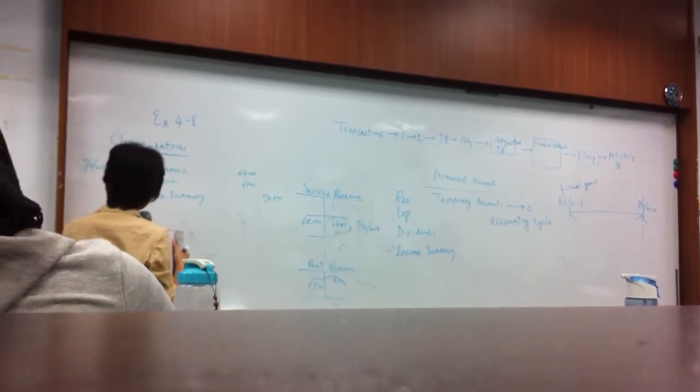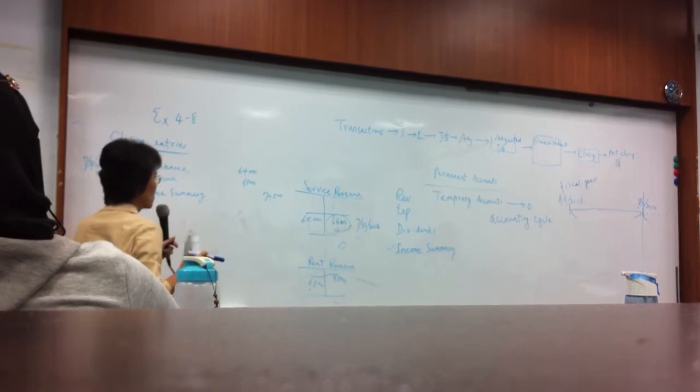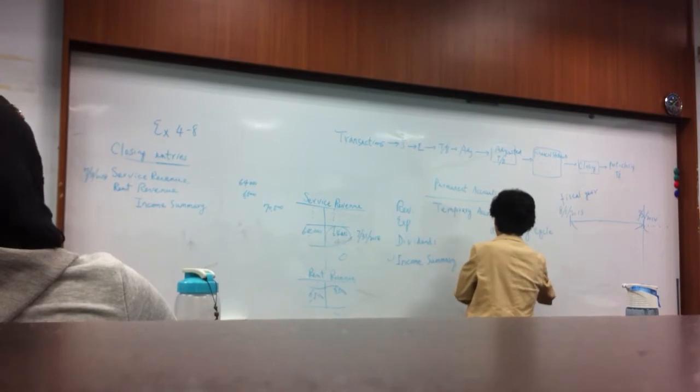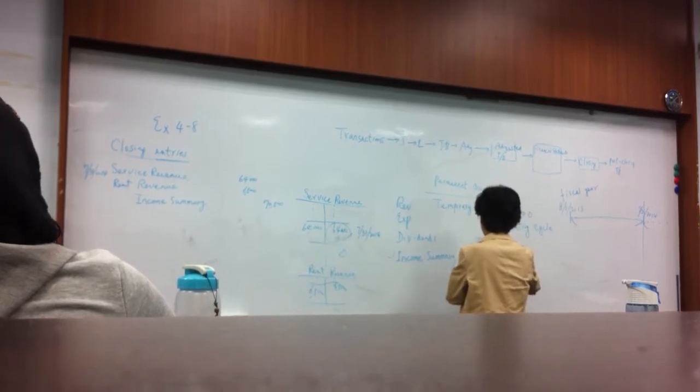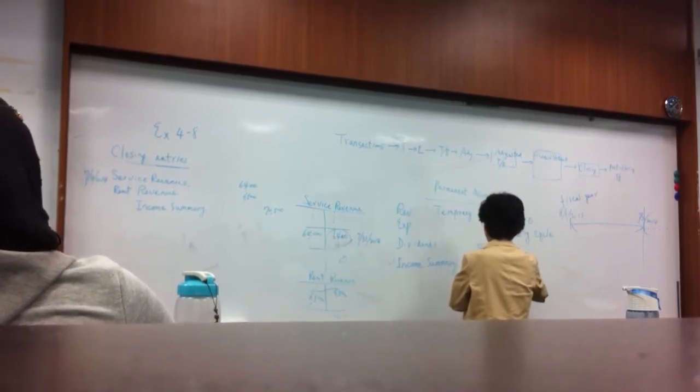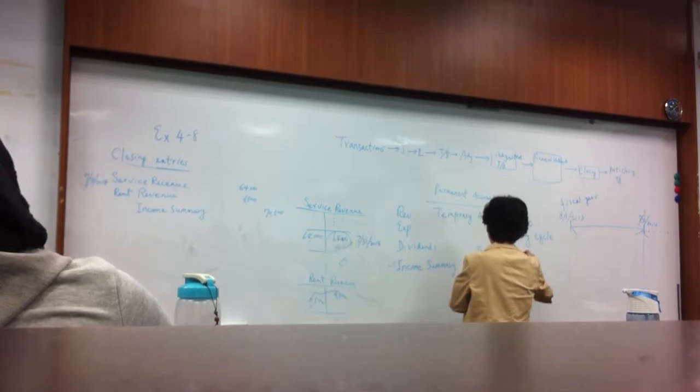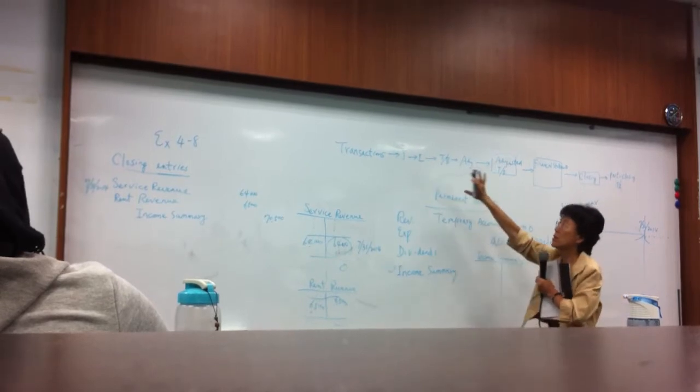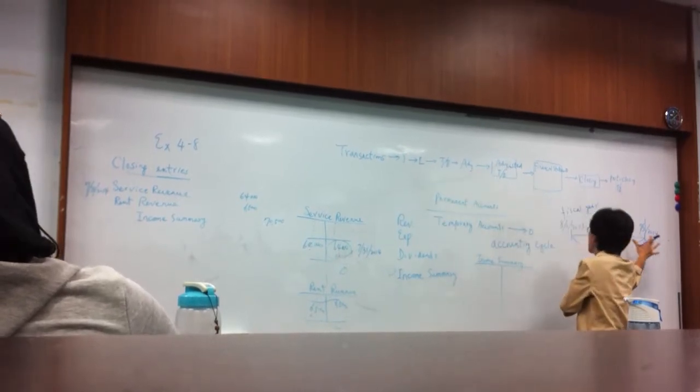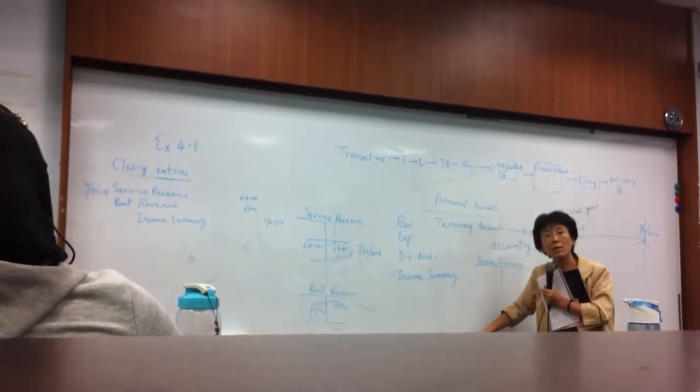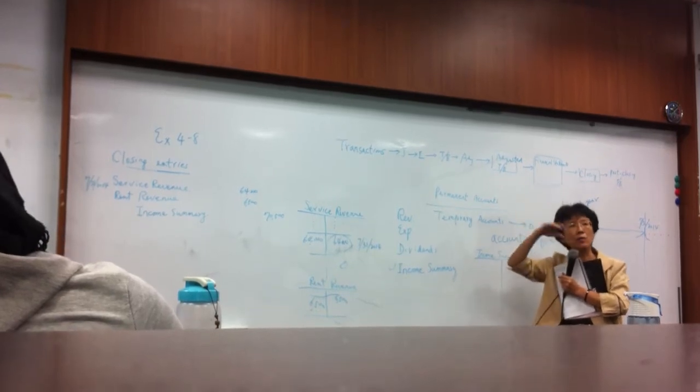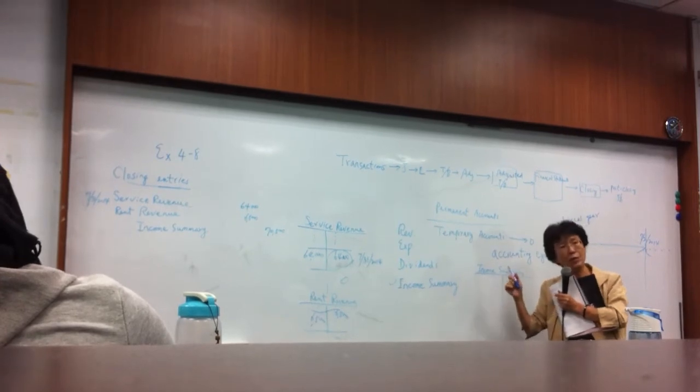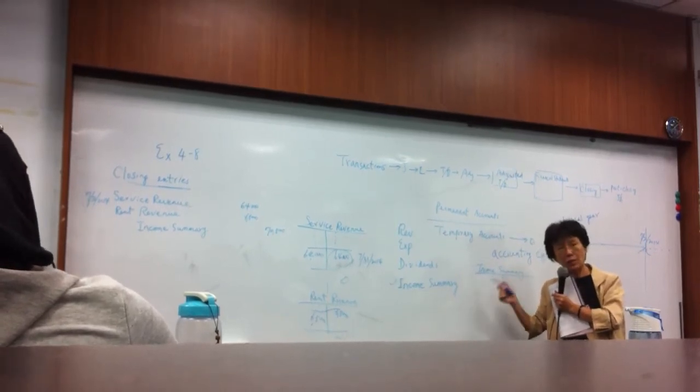Okay, and this is an income summary. This is a new account. This account is special. We don't use this account during this accounting period for these regular recordings. This account is only used now for closing purpose.